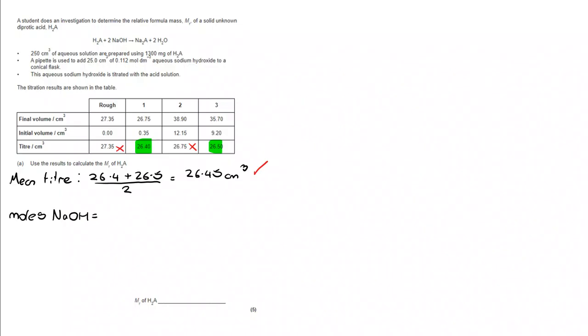We're then going to work out the number of moles of NaOH. And the moles of NaOH, I've got my concentration 0.112, and we used a 25 cm cubed sample of it. So I'm going up to the second bullet point here. From there, I can work out that we have got 2.8 by 10 to the minus 3 moles of NaOH.